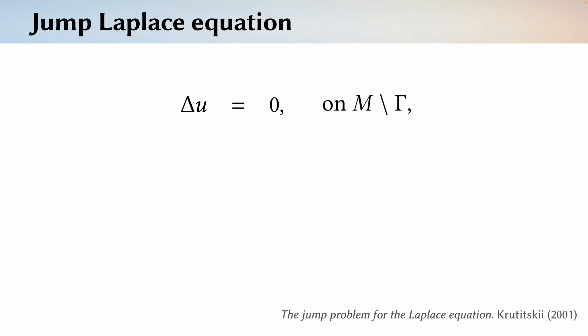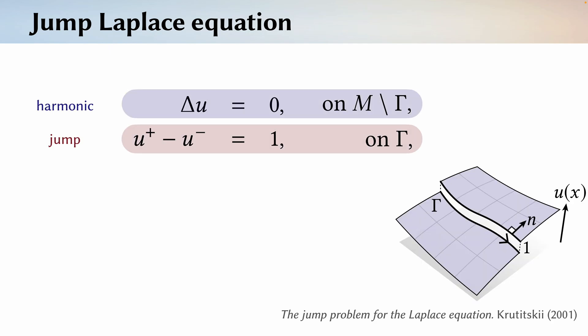To that end, the starting point to our method is the jump Laplace equation. It starts with the ordinary Laplace equation to ensure our solution is harmonic, but also a condition that says our solution should jump across the curve. And third, we have a compatibility condition that ensures the derivative is continuous. This corresponds to a sparse linear system whose size is roughly equal to the number of vertices in our mesh.